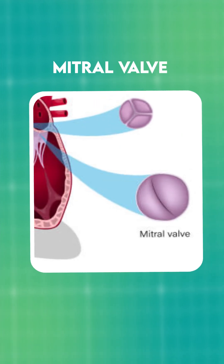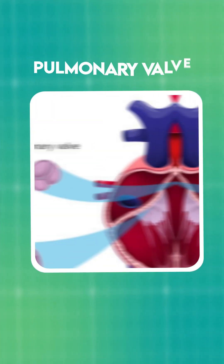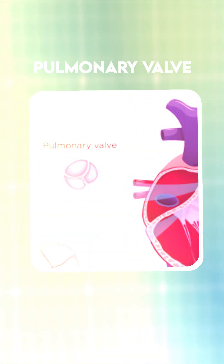A heart valve surgery is a major operation to repair or replace a diseased heart valve. There are four valves in the human heart: aortic valve, mitral valve, tricuspid valve, and pulmonary valve.